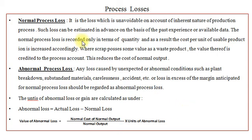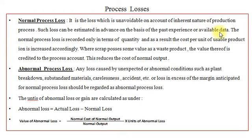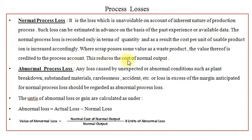Now let us see the process losses. Process losses can be broadly classified into two categories: one is Normal Process Loss and the other is Abnormal Process Loss. Normal Process Loss is the loss which is unavoidable on account of the inherent nature of the production process. Such loss can be estimated in advance on the basis of past experience or available data. The normal process loss is recorded only in terms of quantity, and as a result the cost per unit of usable production is increased accordingly. Where scrap possesses some value, the value thereof is credited to the process account, which reduces the cost of normal output.